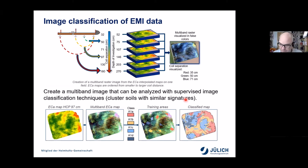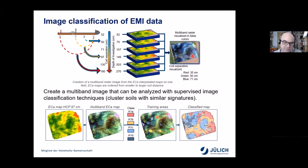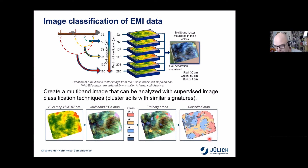Borrowing closely from how remote sensing data are interpreted, we merged the six different depth levels of our EMI data into a multi-band raster image, and used this for image classification — essentially identifying areas with similar signatures, suggesting areas with similar soil. This was done using a supervised image classification technique, resulting in a classified map representing different soil types within each field.